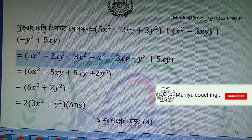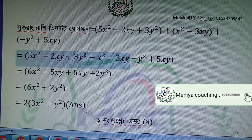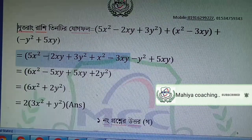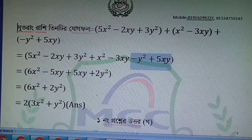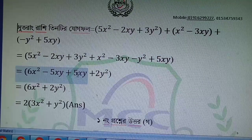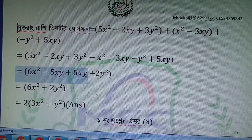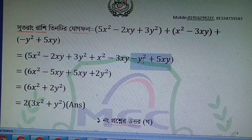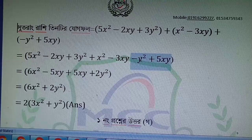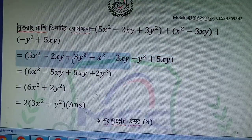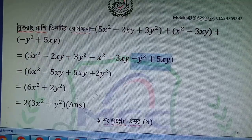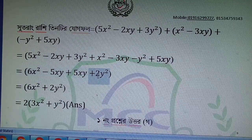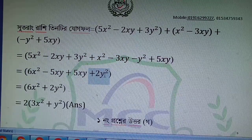Minus 2xy, minus 3xy — I'm going to add those to get minus 5xy. Then plus 5xy. And 3y² minus y² gives plus 2y².